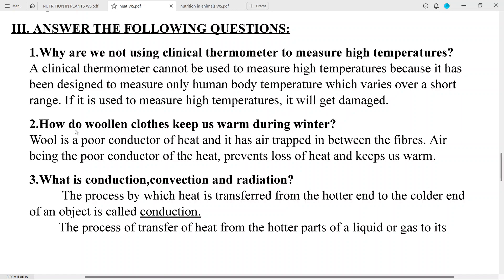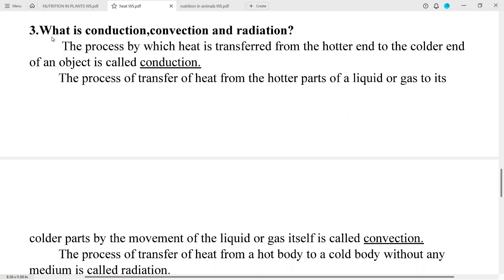Question number 2: How do woolen clothes keep us warm during winter? Answer: Wool is a poor conductor of heat and it has air trapped in between the fibers. Air being the poor conductor of heat prevents loss of heat and keeps us warm.